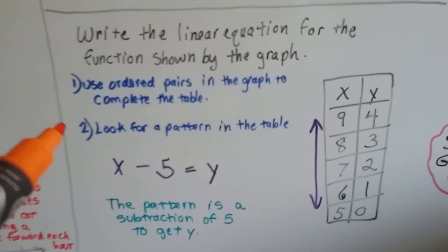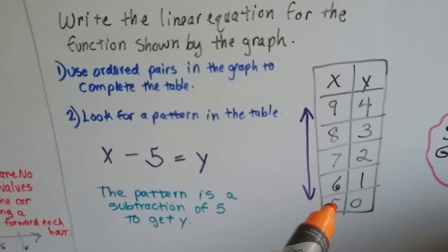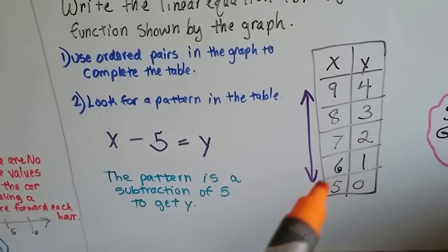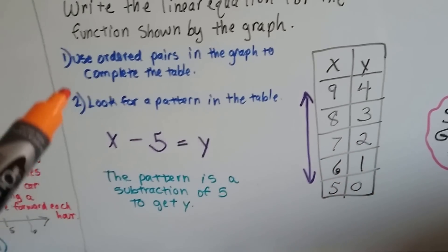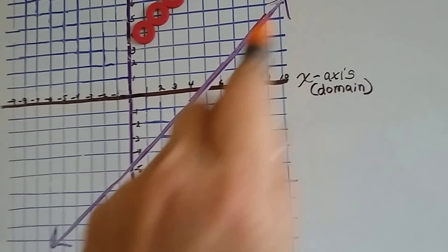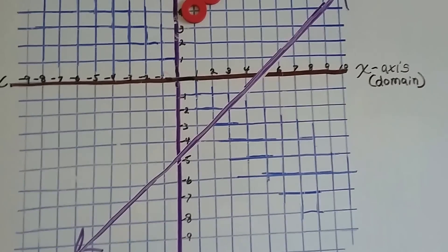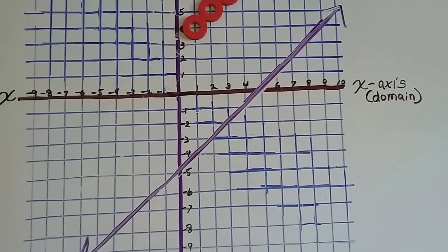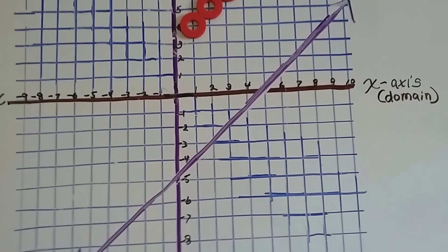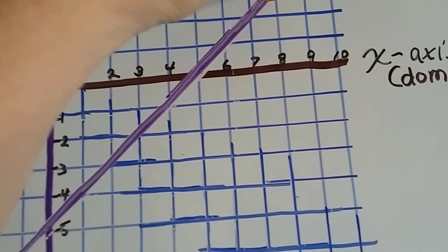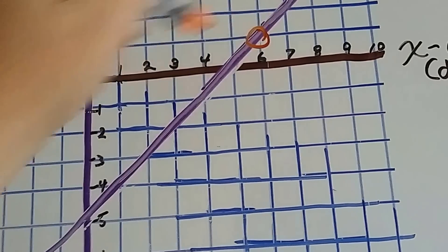So the next one says, write a linear equation for the function shown by the graph. So here's the graph. We've got 9 and 4 for the x and y. And then 8 and 3. And then 7 and 2. And 6 and 1. And 5 and 0. So we used ordered pairs in the graph to complete the table. So this was the drawing on the graph. We were just given this. And we were told to write a linear equation for the function shown by this. So what I did was I found ordered pairs like 9 and 4 and 8 and 3 and 6 and 1 was here.